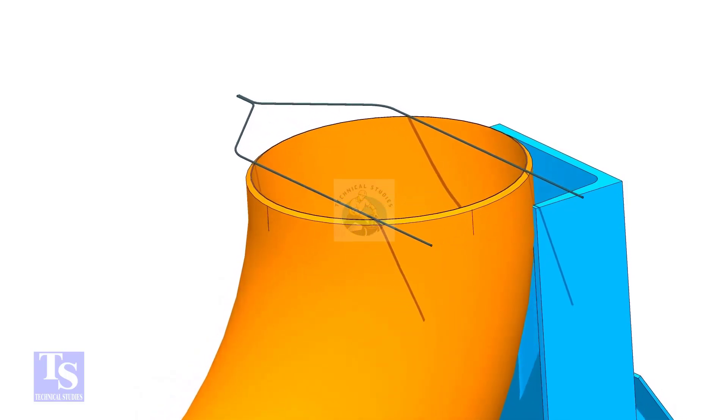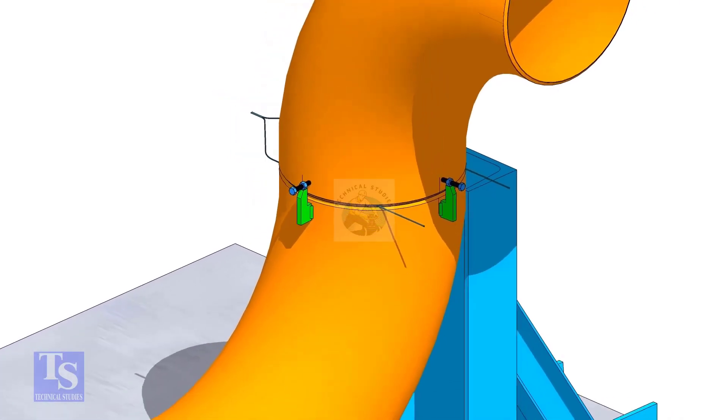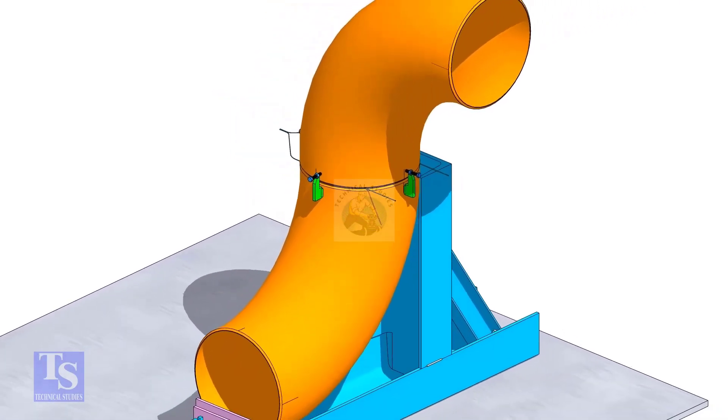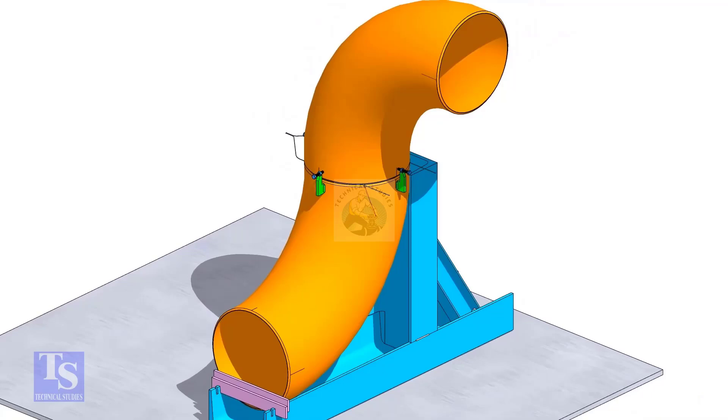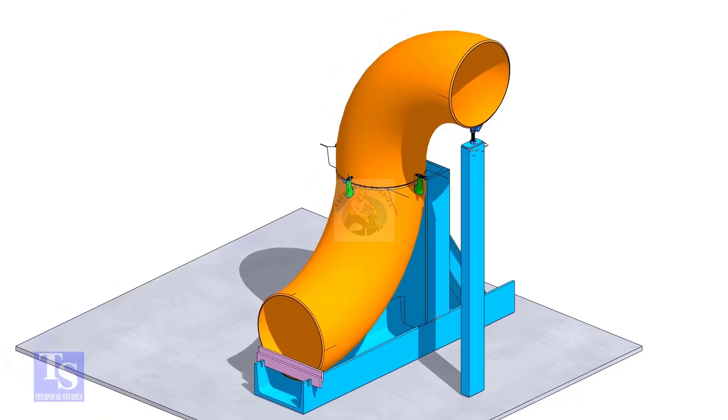Put the gap rod on the top face and tack weld four numbers jack bolts as shown. Put the other elbow and match the center lines in which direction you want to rotate the elbow. Tack weld an adjustable support below this elbow and adjust the height.